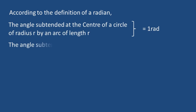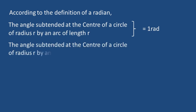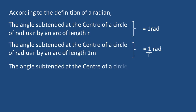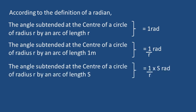The angle subtended at the center of the circle of radius R by an arc of length 1 meter is equal to 1/R radian. The angle subtended at the center of the circle of radius R by an arc of length S is equal to S/R radian. This means theta = S/R, so S = R·theta radian.